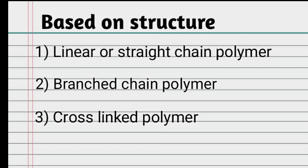The first type is linear or straight chain polymer, where monomer units are joined together in a linear arrangement to form a straight chain. The second type is branched chain polymer.